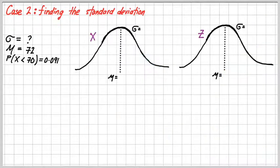So one more case we need to consider is finding the standard deviation. So there's our setup again. I'm going to use some different information this time. So say we're given a question, we're asked to find the standard deviation, we're given a mean of 72, and we're told that the probability that x is less than 70 is 0.091. So let's see what that looks like. And there's all our information there. Obviously I've got a question mark by the standard deviation because that's what I'm looking for.